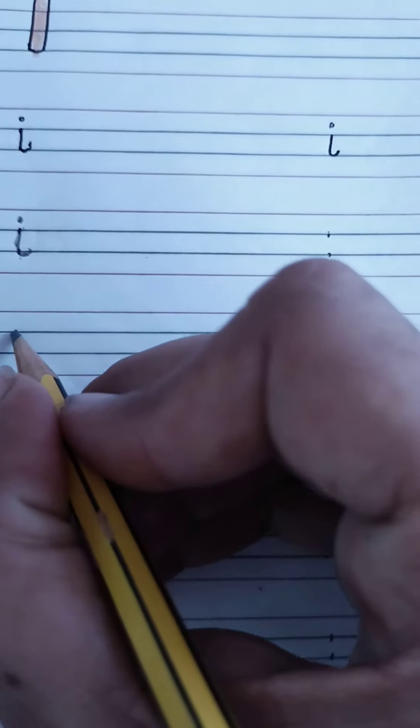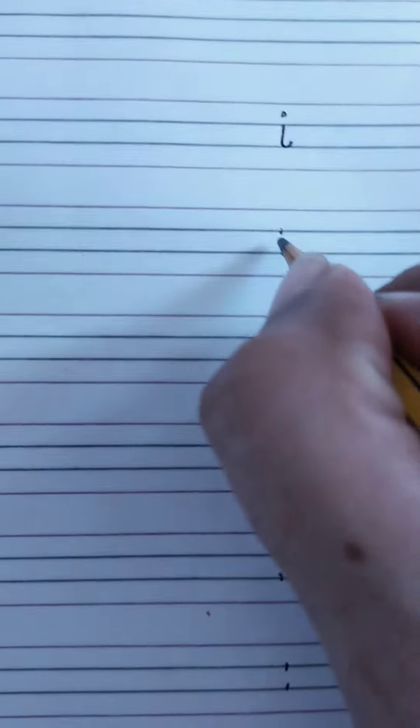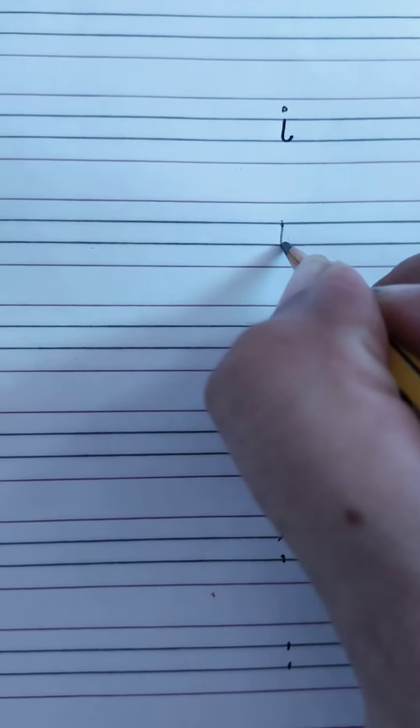Now see again. Standing line, then tail, then dot. Standing line, then tail, and dot.